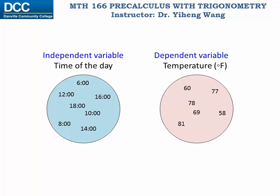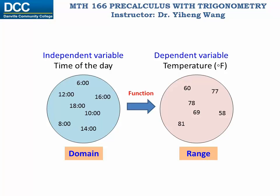As we covered in an earlier video, we can represent a function as the relation between two sets, represented here by two circles. The first set is the collection of all the independent variable values, and this set is called the domain. The second set collects all the dependent variable values, and this set is called the range. The function matches an element in the domain with exactly one element in the range. In other words, the domain is the collection of all allowable independent variable values, and the range is the collection of all resulting dependent variable values.